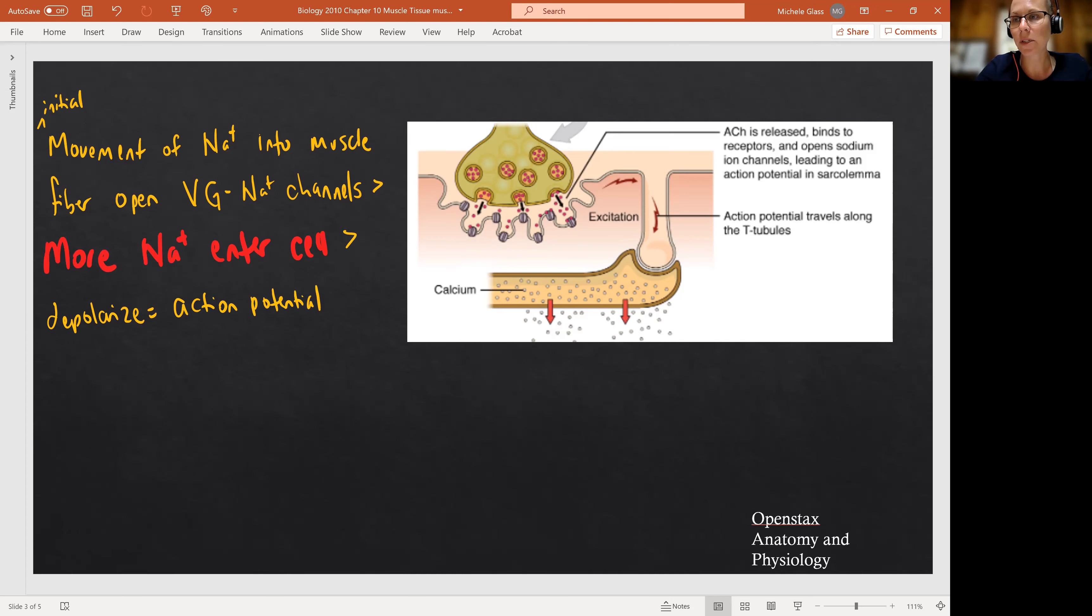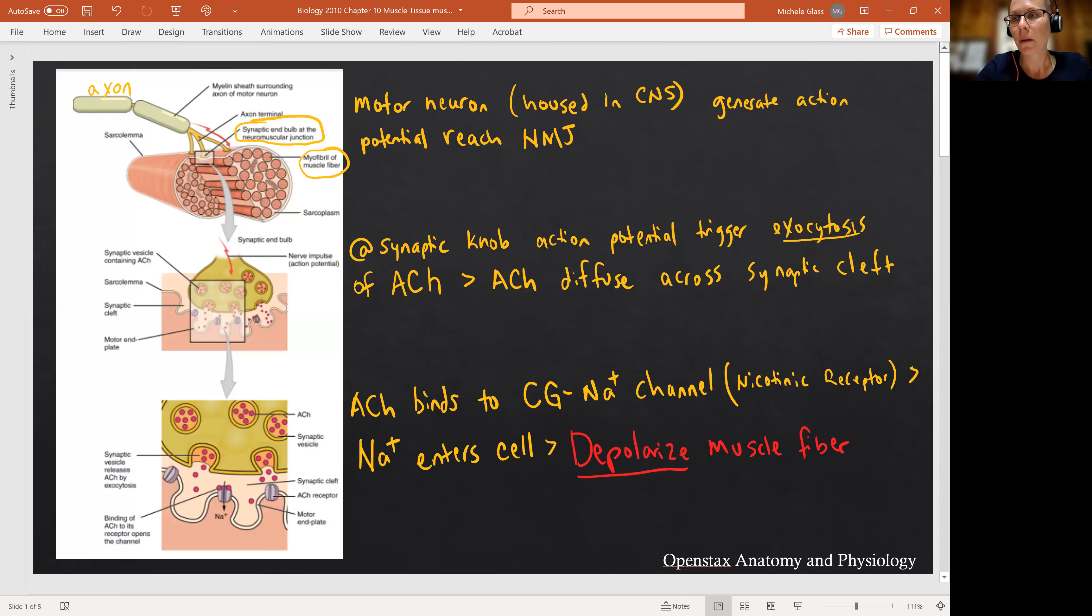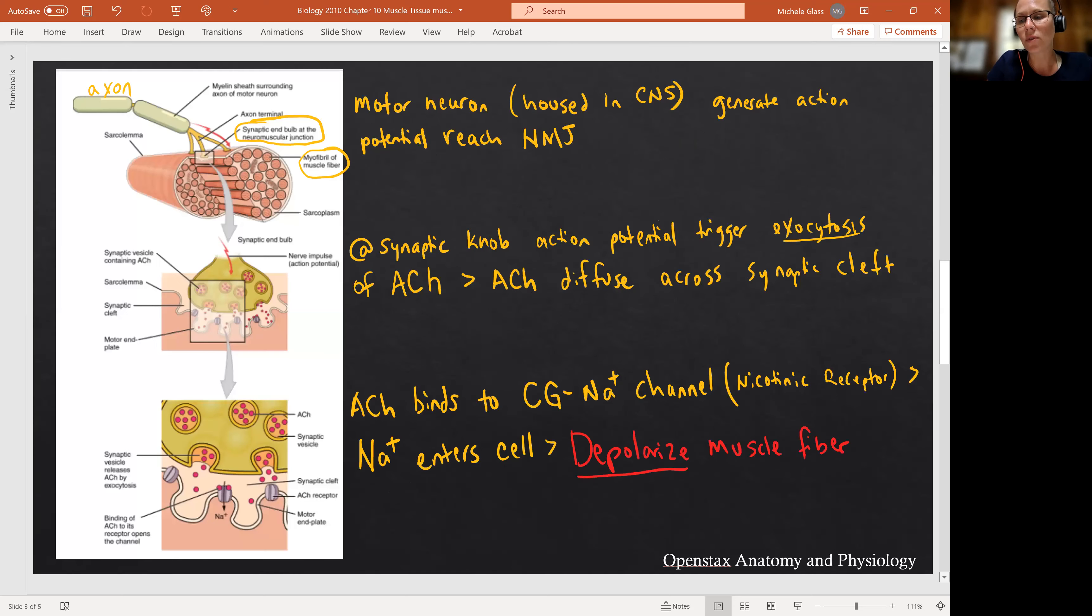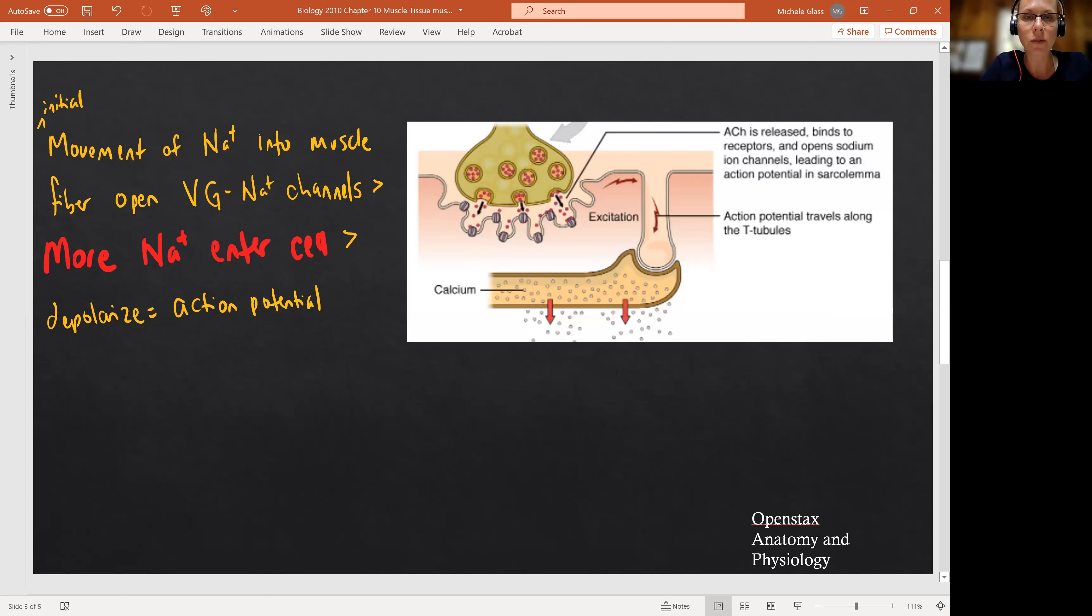So let me go back up to our beginning slide. And we said for big step three, the action potential propagates across the sarcolemma and into the T tubules. How did we get the action potential? That's from the opening of those voltage-gated sodium channels. So as that sodium moves in, this is how we actually get the action potential in the skeletal muscle.